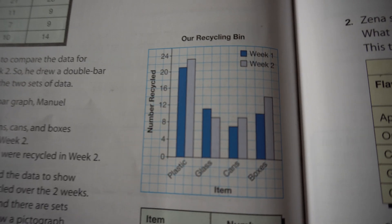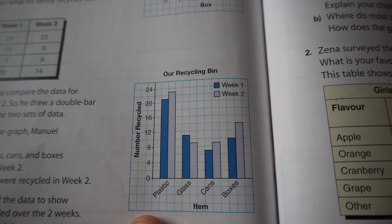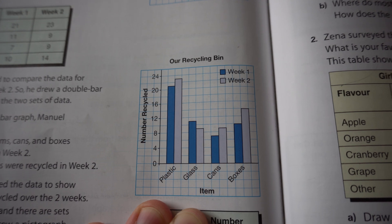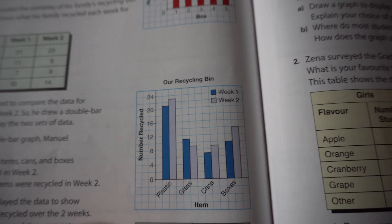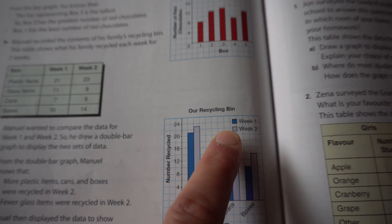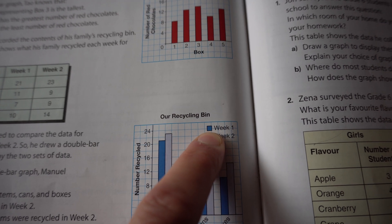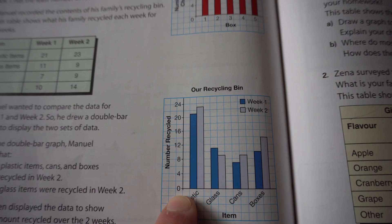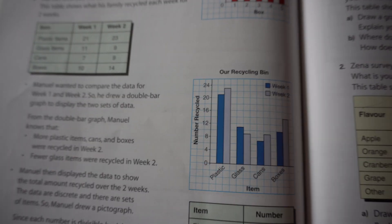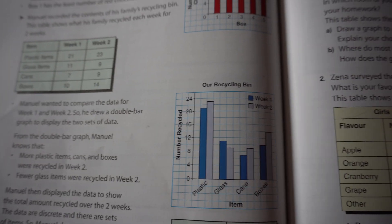So over here we have a double bar graph that compares recycling for different items, but then it gives you two choices: week one and week two. That way you can compare and see how those people did for that time period.